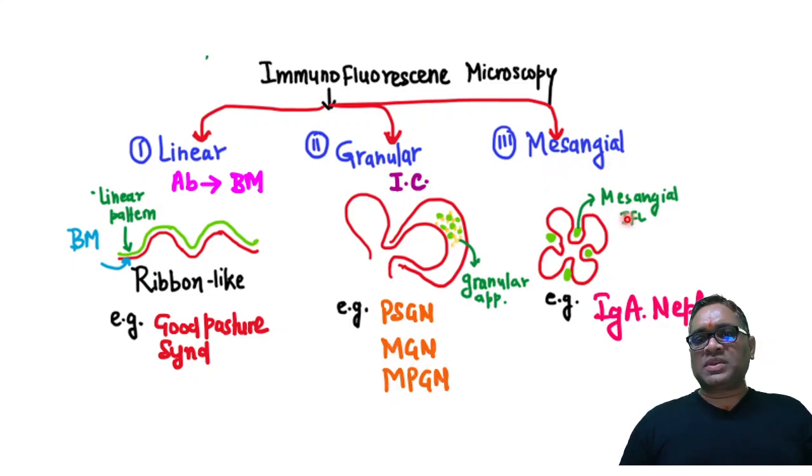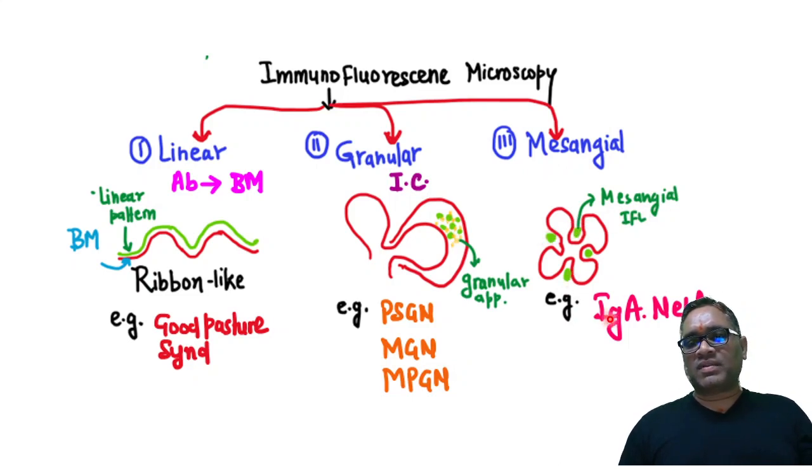Mesangial pattern will be showing you mesangial deposits in between the mesangial capillaries, and that will be seen in IgA nephropathy.